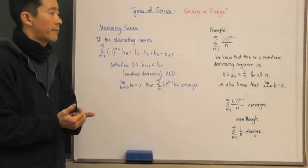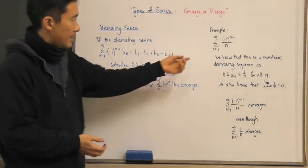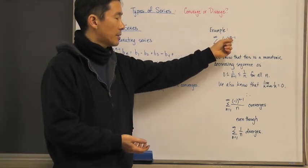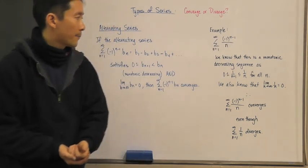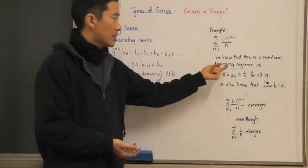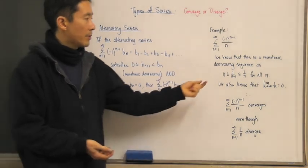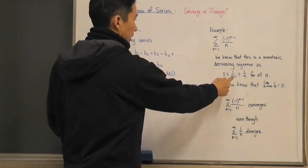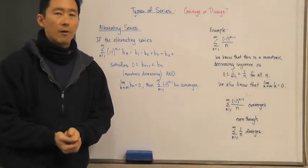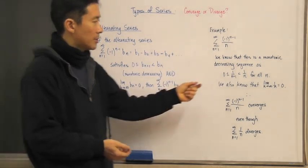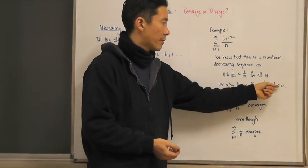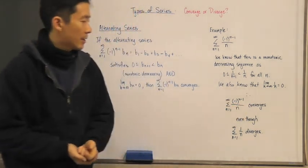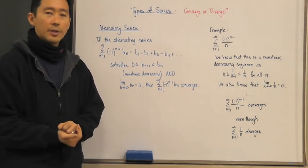Let's look at an important example: the infinite series from n equals one to infinity of negative one to the n minus one, divided by n. This is a monotonic decreasing sequence because 0 < 1/(n+1) < 1/n for all n. We also know the limit as n approaches infinity of 1/n equals zero, so this alternating series converges.